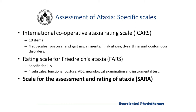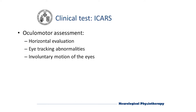The International Cooperative Ataxia Rating Scale, or ICARS, comprises four subscales which assess postural and gait impairments, limb ataxia, dysarthria, and oculomotor disorders. It has been validated in focal cerebellar conditions, spinocerebellar ataxias, and Friedreich's ataxia. The Rating Scale for Friedreich's Ataxia, or FARS, is specific for Friedreich's ataxia. There is also the Scale for the Assessment and Rating of Ataxia, SARA, which we will explain in an exhaustive way along this video.